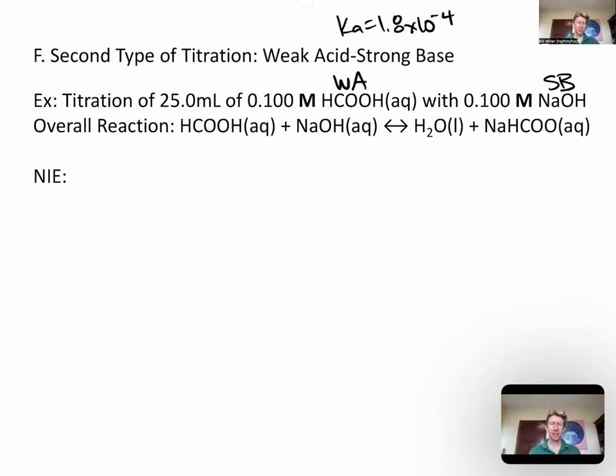Just to revisit the seven strong acids, we've got hydrochloric, hydrobromic, hydroiodic, nitric, sulfuric, chloric, and perchloric. So those are the seven strong acids.